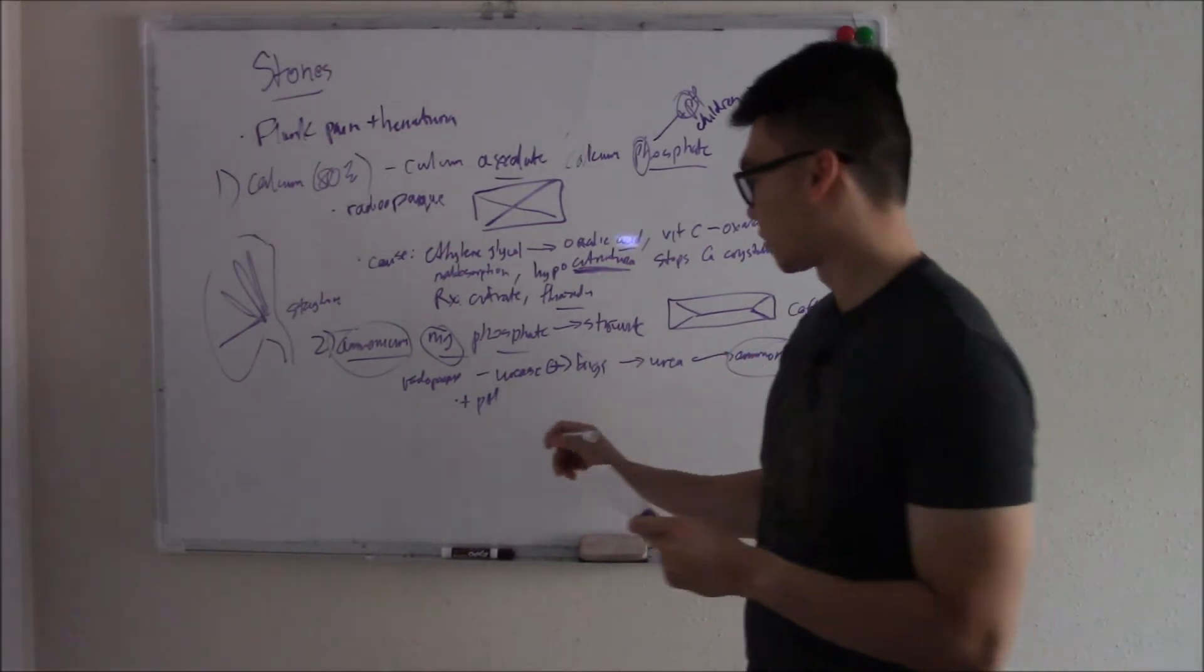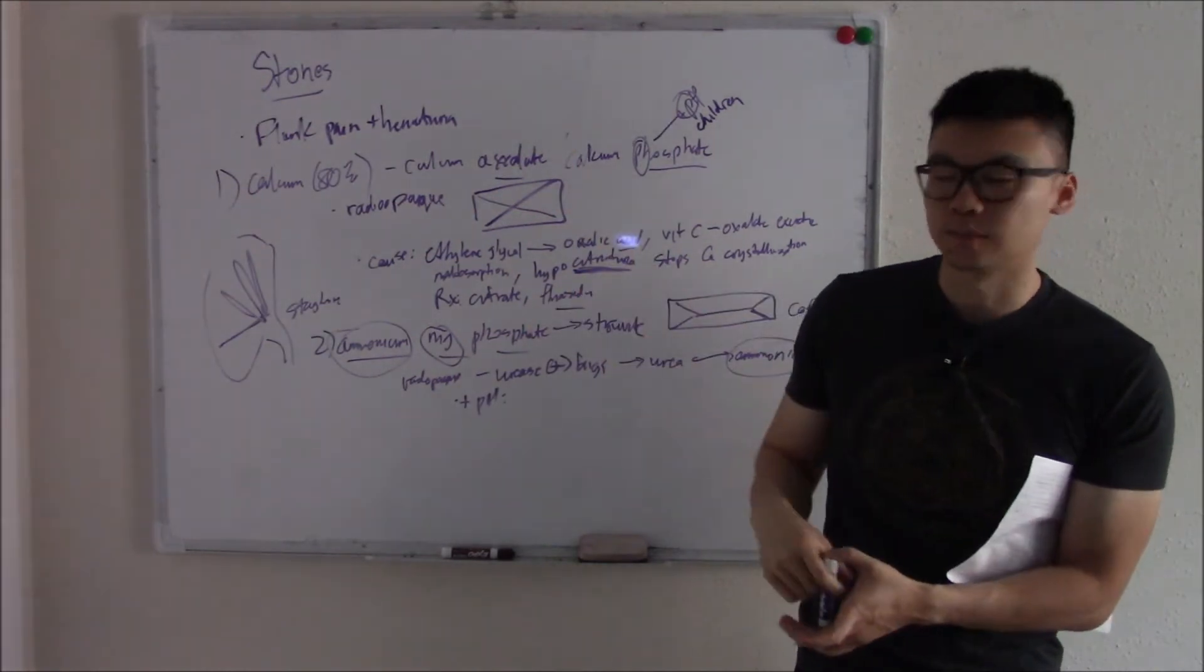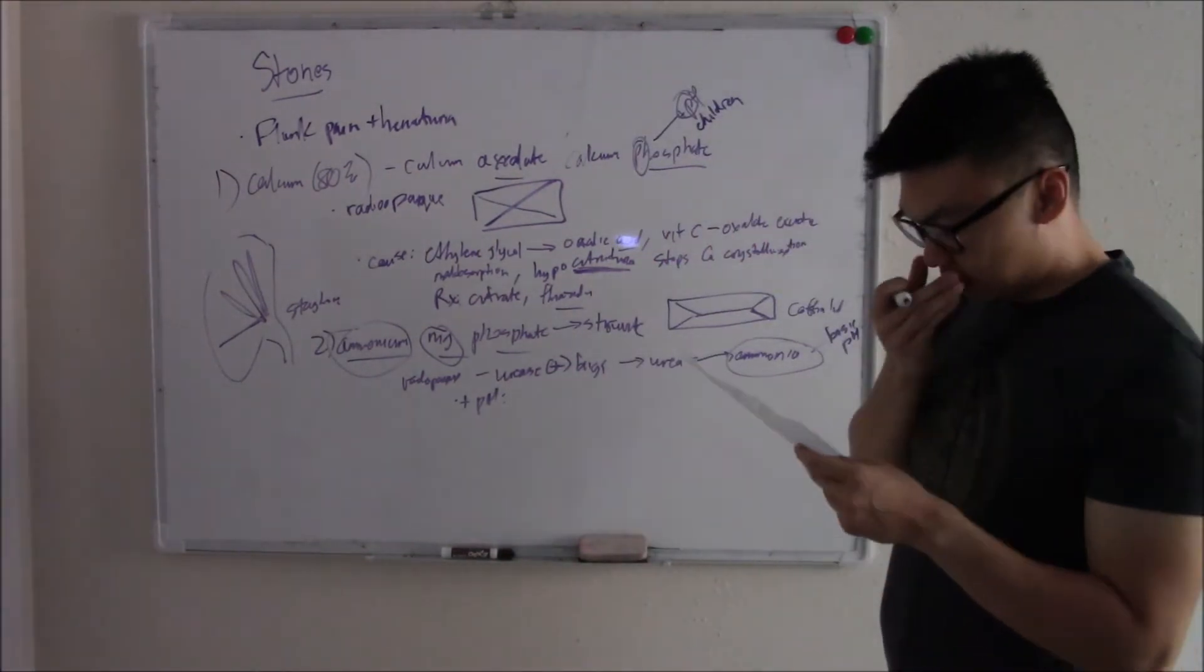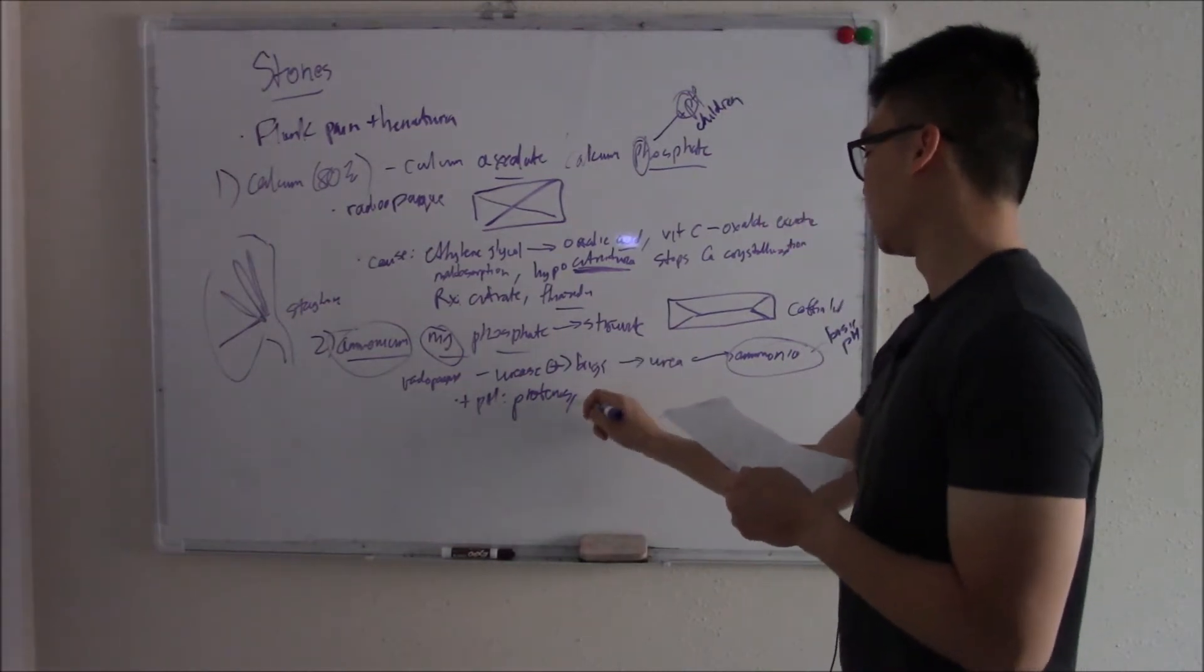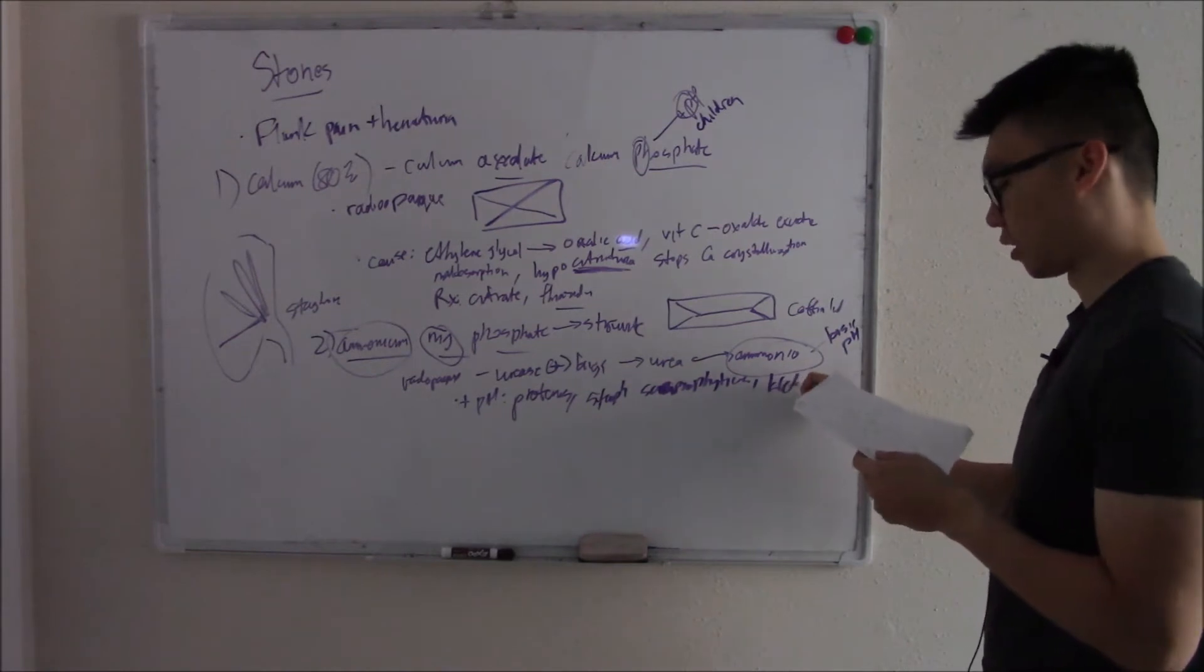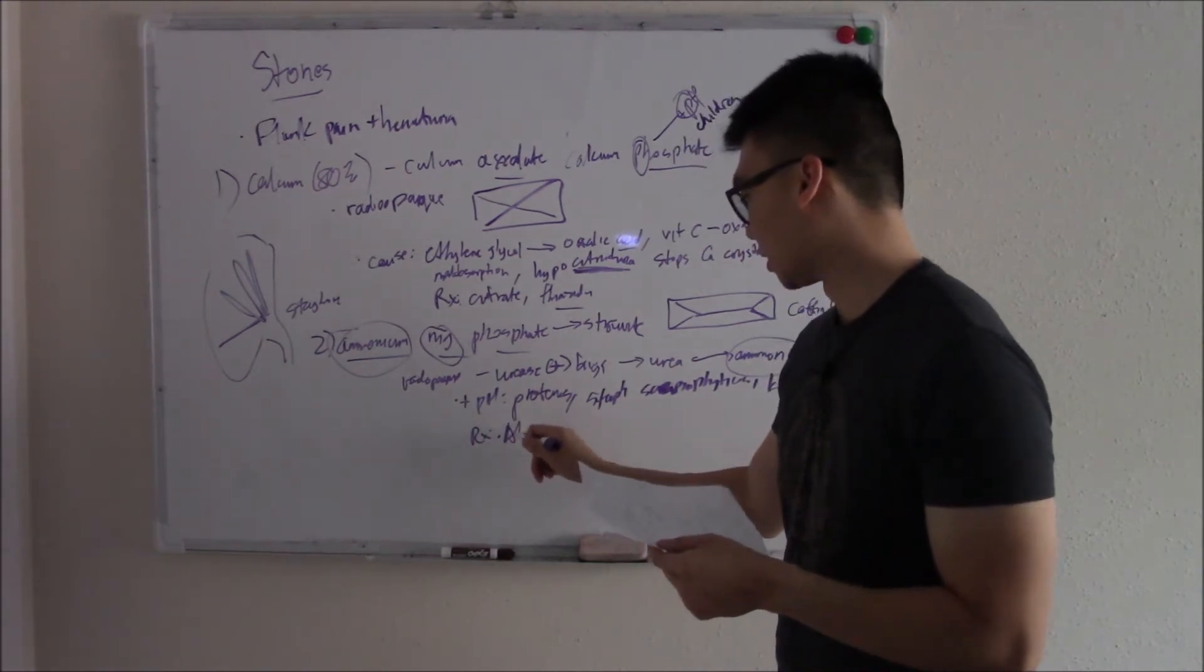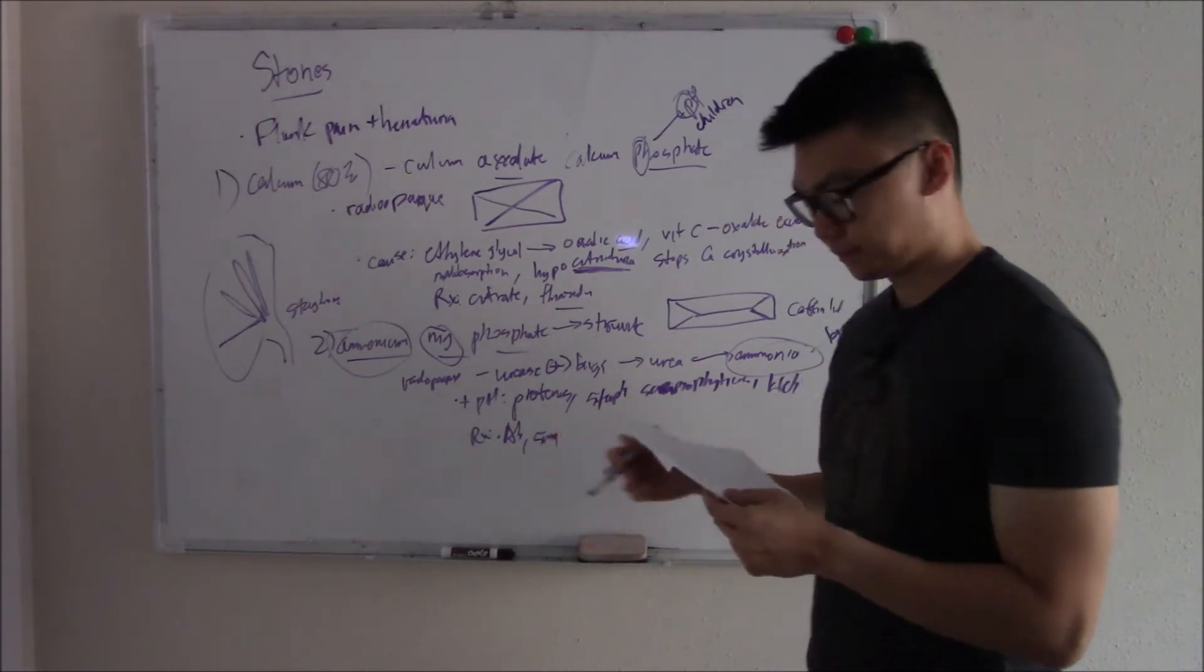What are some urease positive bugs? These are Proteus, Staph saprophyticus, Klebsiella. There are a ton more, but if you were able to come up with these, then you're in good shape. What do you do treatment-wise? If you have a bug, you have to give antibiotics. And if it's big enough, if it's a staghorn, then surgery is probably the most appropriate.